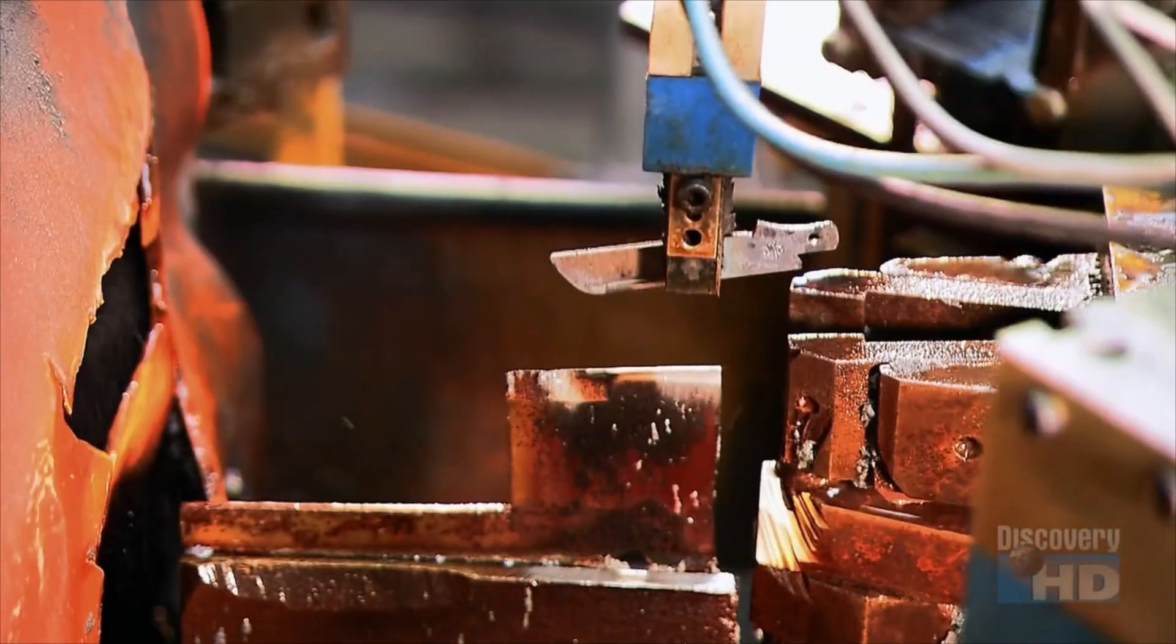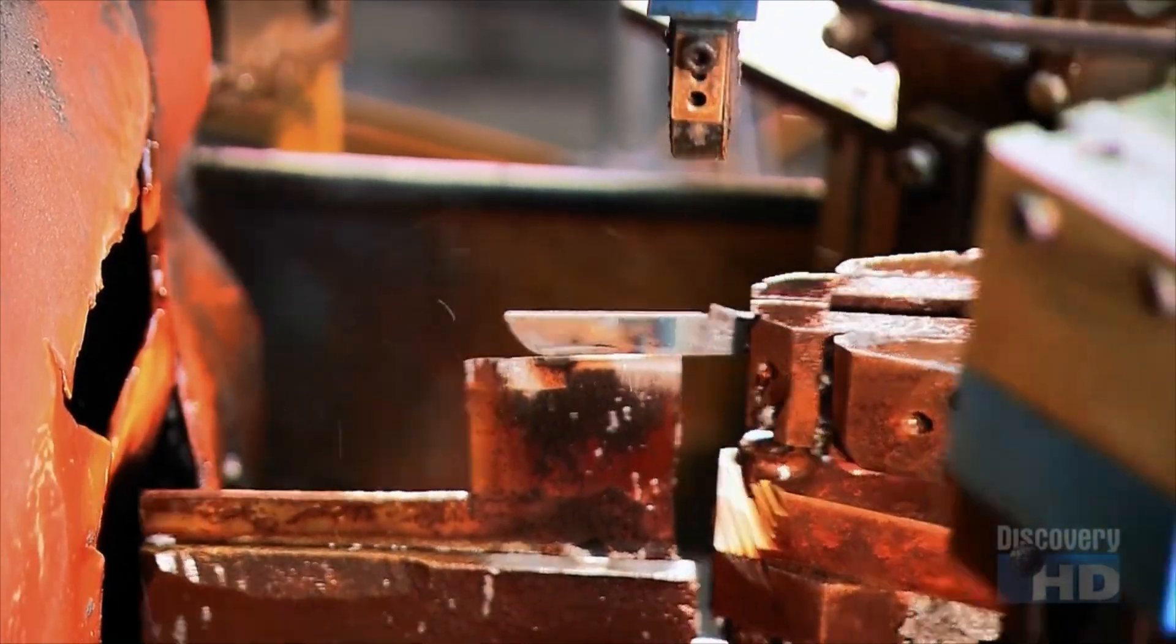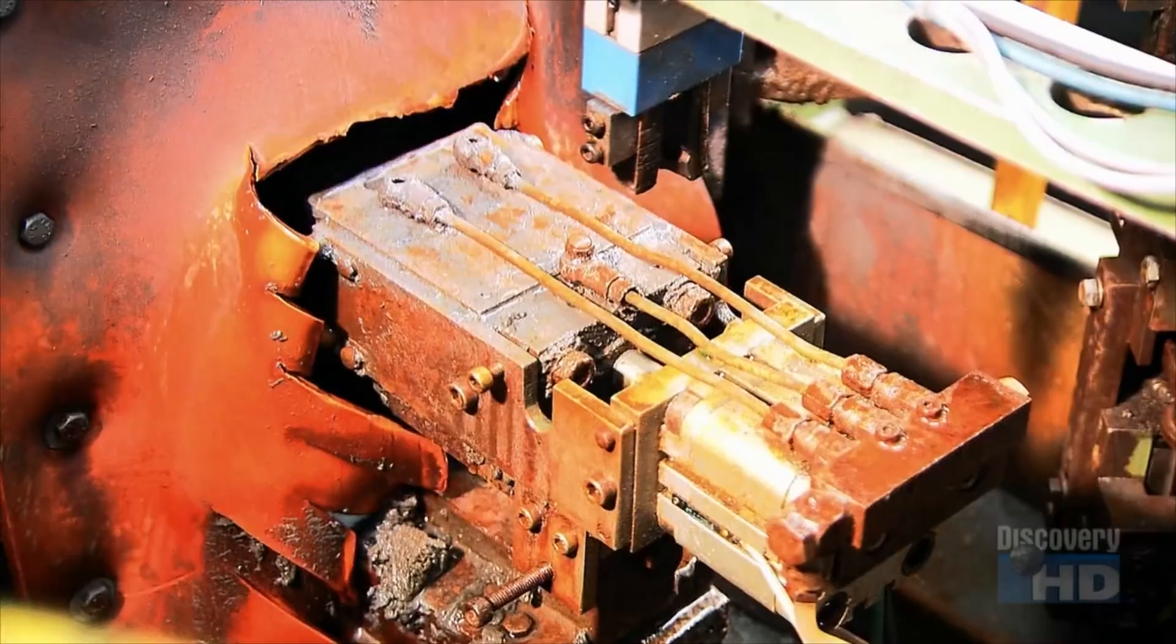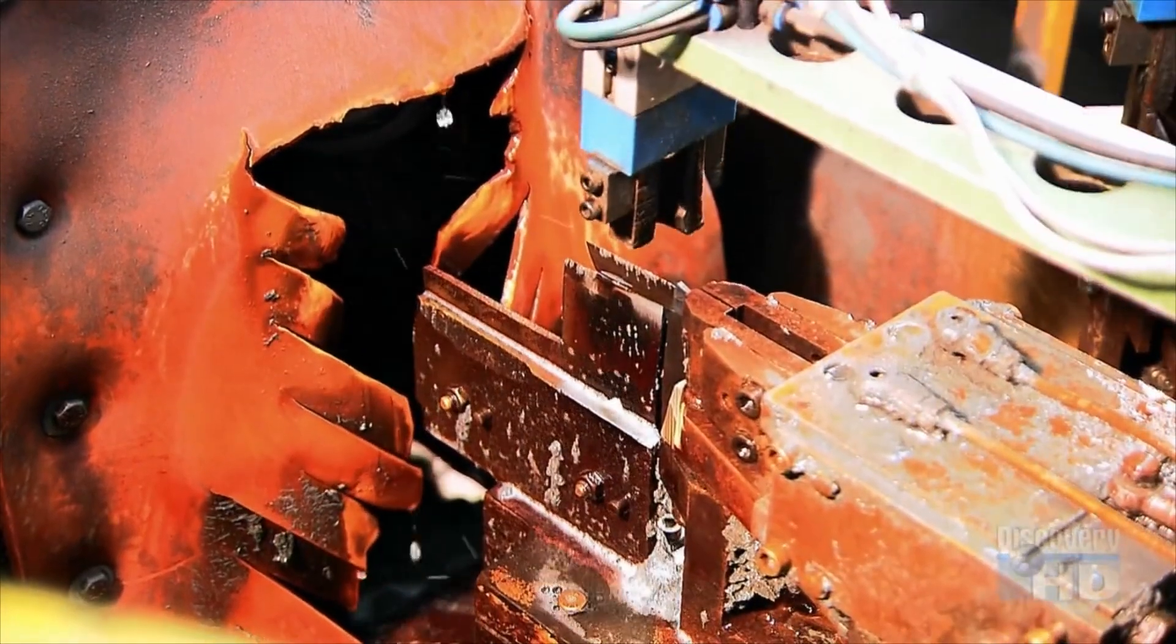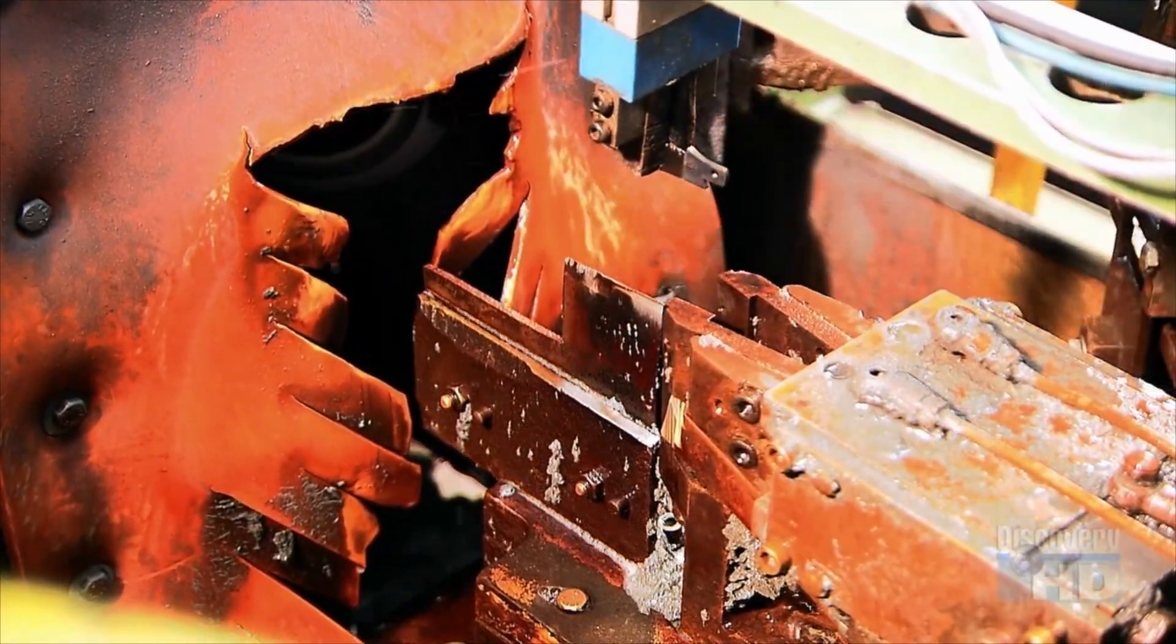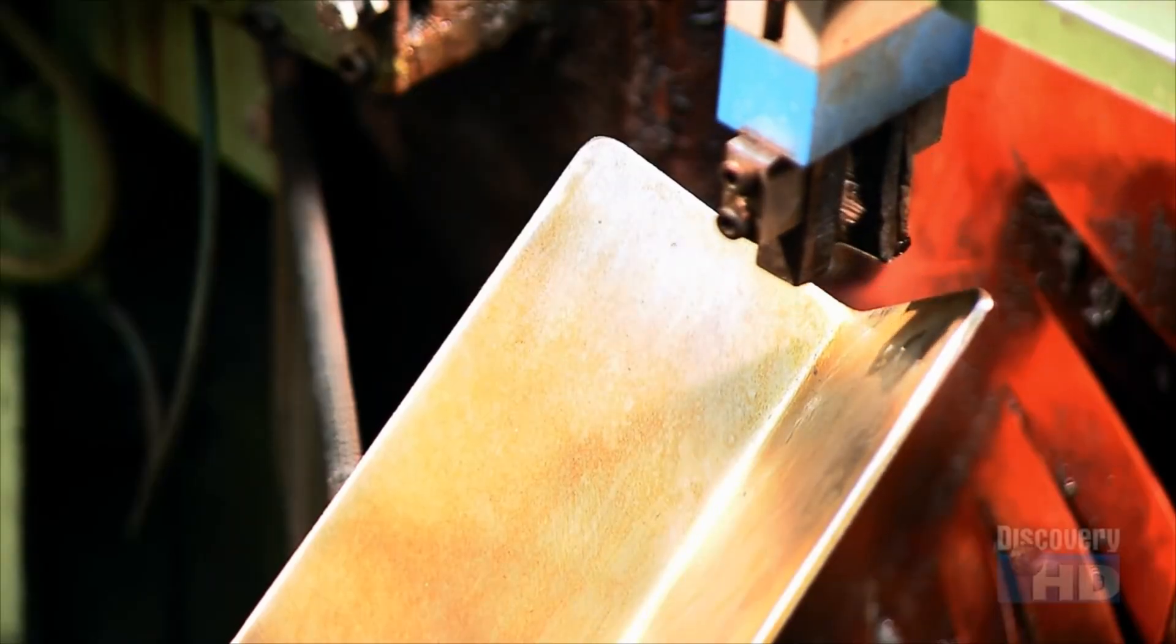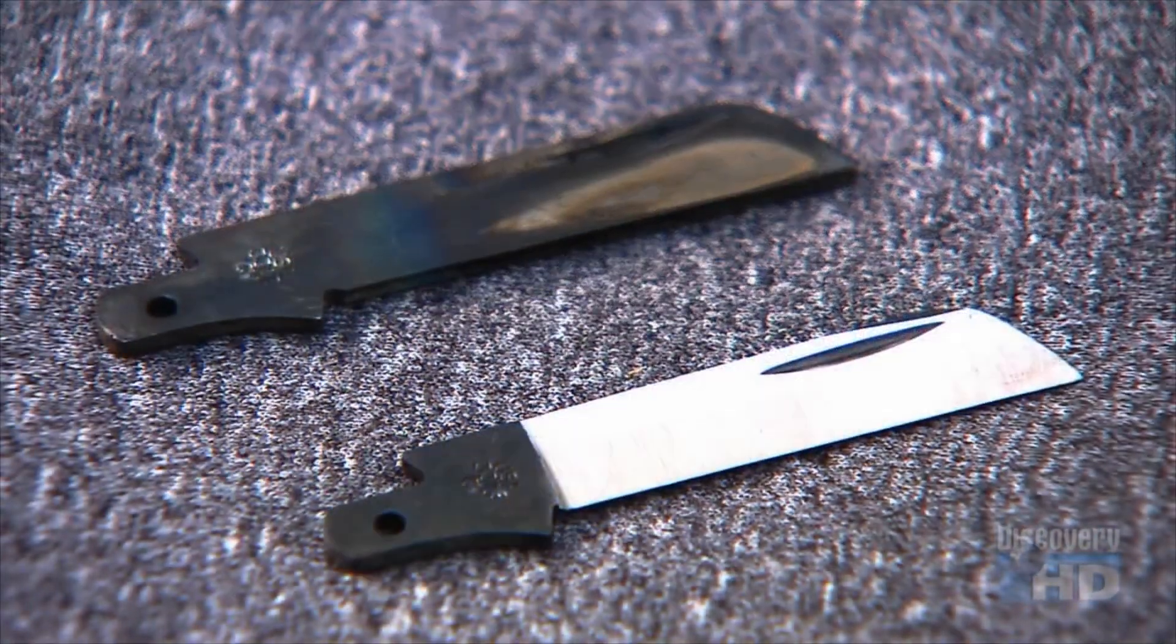A robot now transfers a blade shape into a computerized grinder that bevels the edge, but leaves it blunt. Honing will give it a cutting edge later. Here you can see the difference the grinding makes.